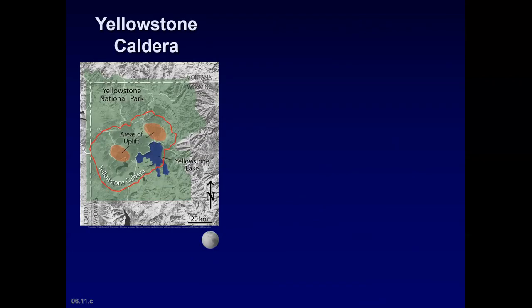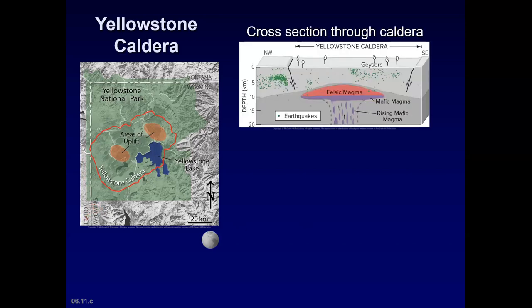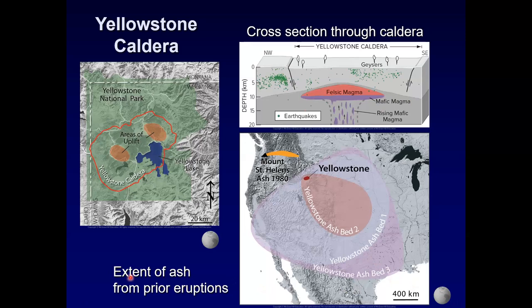Let's look at the Yellowstone Caldera in Wyoming — Yellowstone is partially in Montana as well. The red line shows the area of the caldera, which formed about 640,000 years ago. We have a cross-section through Yellowstone showing faults, earthquakes, and the position of the magma. Geologists have also mapped out previous ash beds from past eruptions.